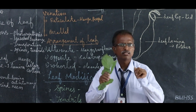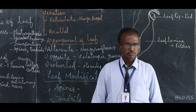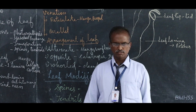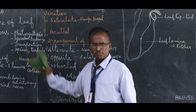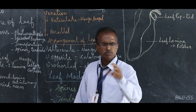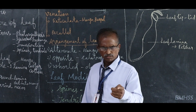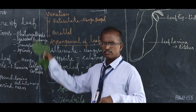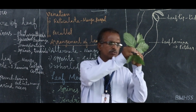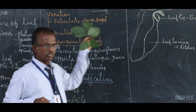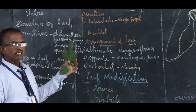In our home, where is food prepared? Kitchen. Very good. Meanwhile, in plants, where is food manufactured? Do you know? It is the leaf. Let us now see the very important topic — the leaf.